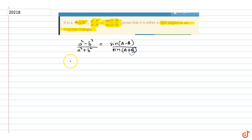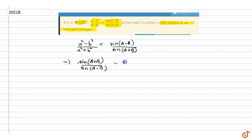From this we can write: sin(A + B)/sin(A - B) equals (a² + b²)/(a² - b²). Now by using componendo and dividendo,